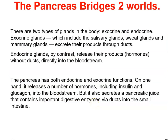The pancreas bridges two worlds: there are two types of glands in the body — exocrine and endocrine. Exocrine glands, including salivary glands, sweat glands, and mammary glands, excrete their products via ducts. Endocrine glands release hormones directly into the bloodstream without ducts. The pancreas has both endocrine and exocrine functions: it releases hormones including insulin and glucagon into the bloodstream, and also secretes pancreatic juice containing digestive enzymes via ducts into the small intestine.